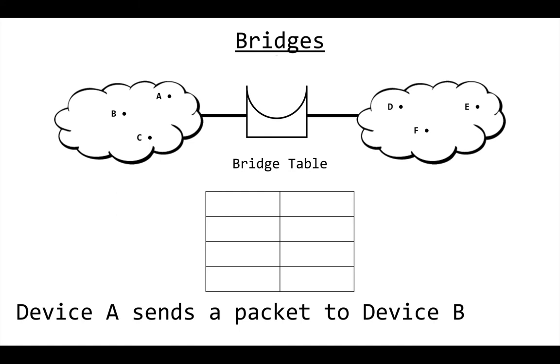B will see it and say 'hey this is for me.' C will see it and say 'oh this is not for me, I can ignore it.' Now the bridge, not knowing where A and B are yet, will retransmit it out the other side into the cloud on the right. So D, E, and F will all see that packet and say 'oh that's not for me.' Since the bridge did see a packet from device A, it's going to say 'okay, A is on the left side of me.'